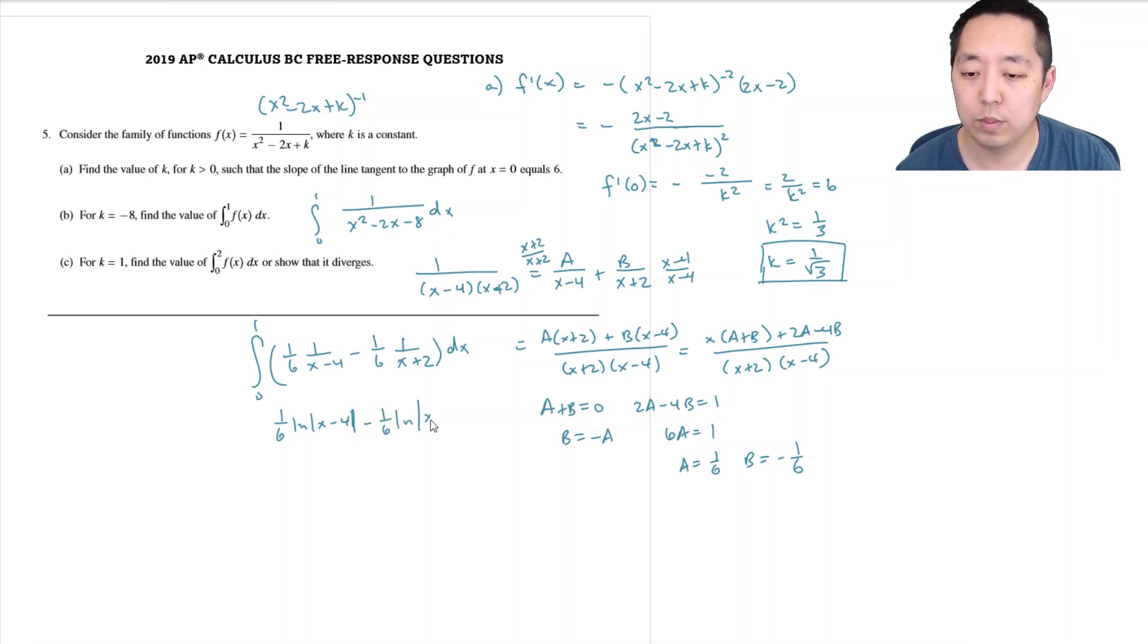A lot of people just drop them sometimes, but you can only drop them if you know that the inside is going to be bigger than zero. So this is going to be 1/6...